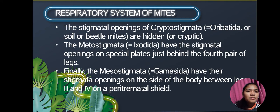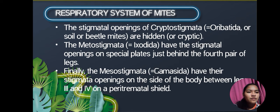The stigmata openings of Cryptostigmata, or the soil oribatid mites, are hidden or cryptic. The Metastigmata have the stigmata opening on special plates just behind the fourth pair of legs. Finally, the Mesostigmata have their stigmata openings on the side of the body between the third and fourth legs, on a peritremal shield.